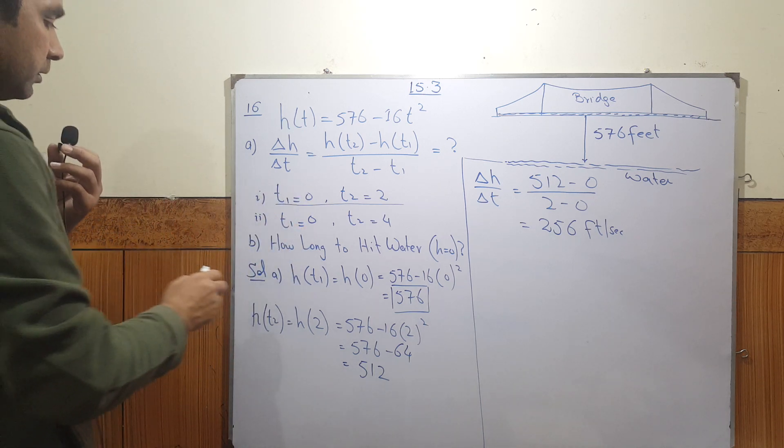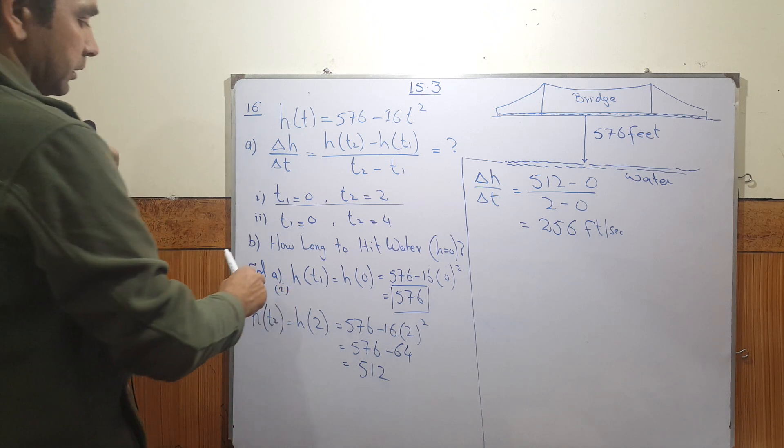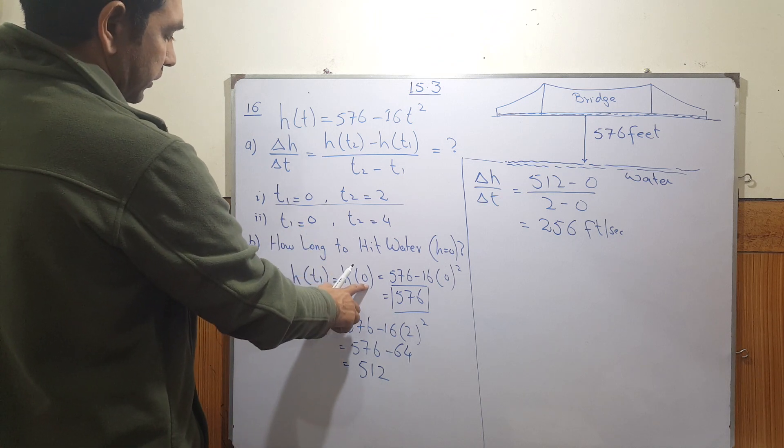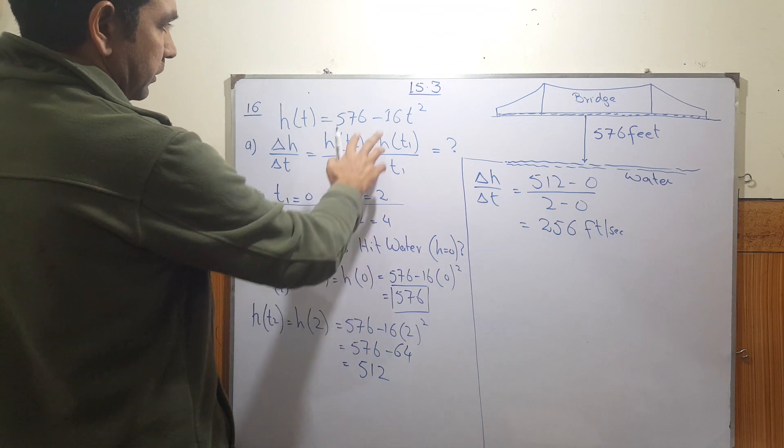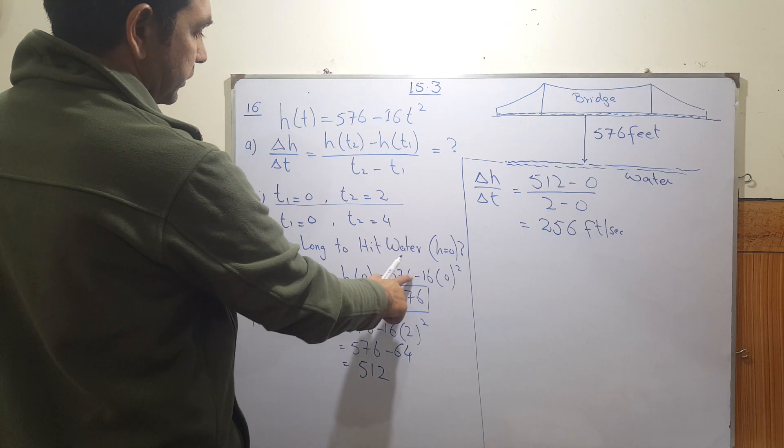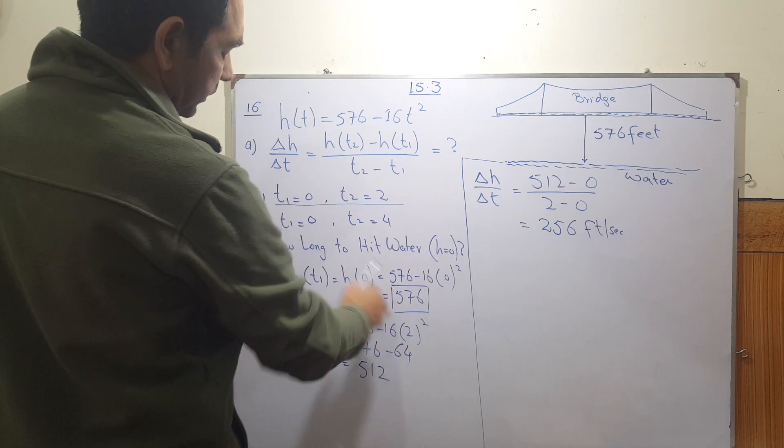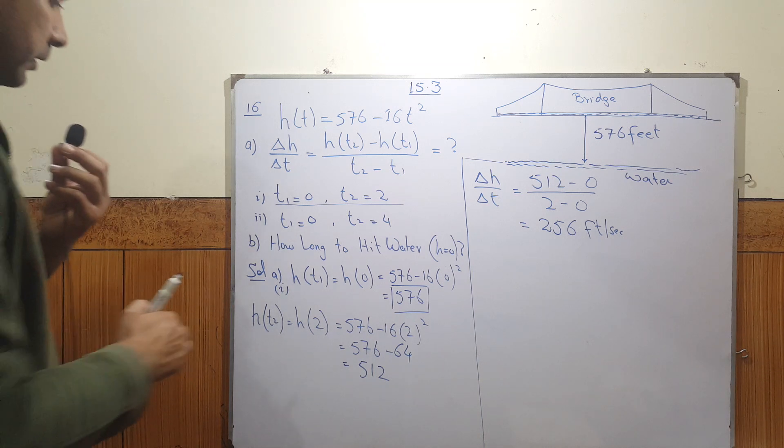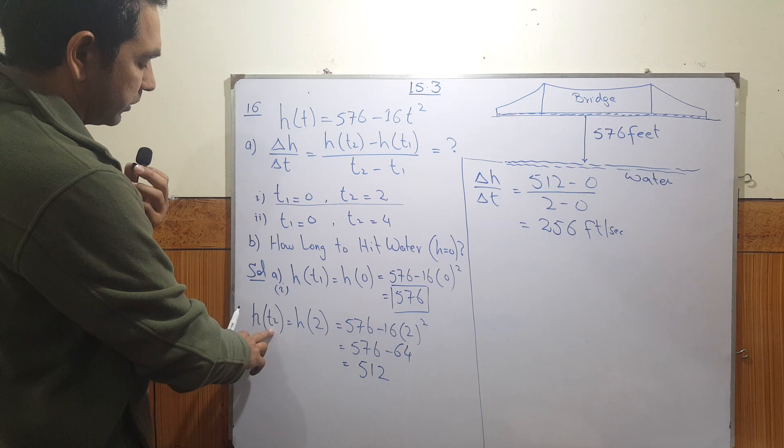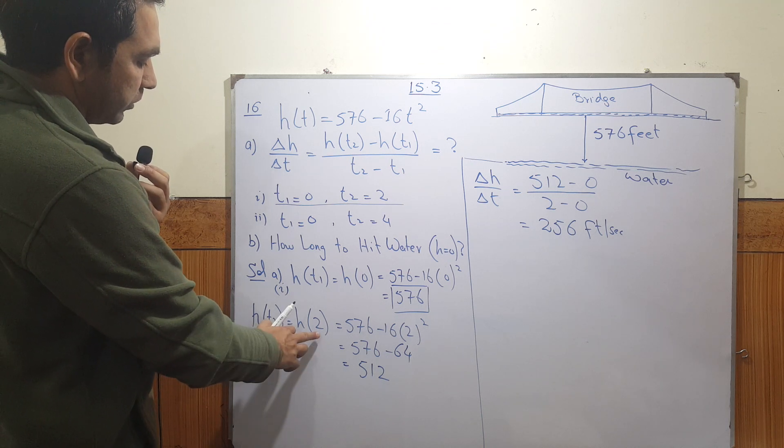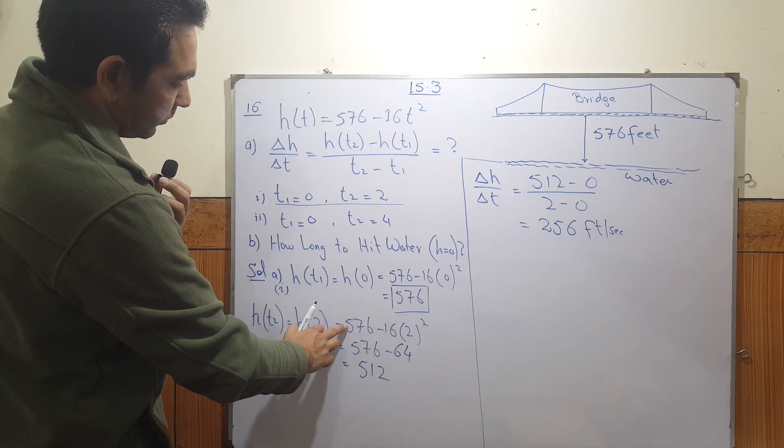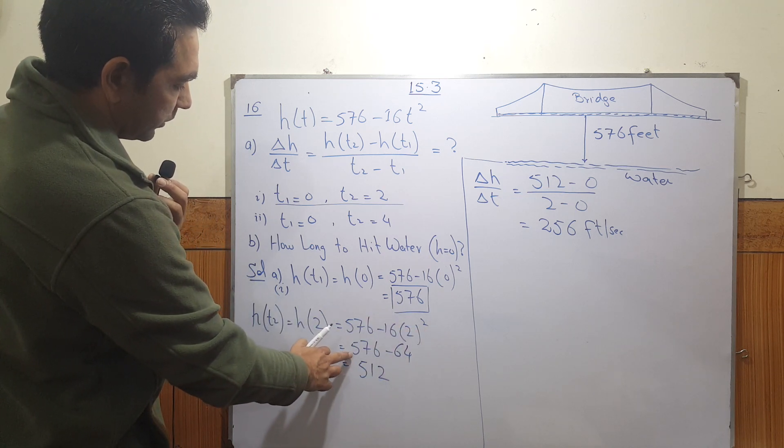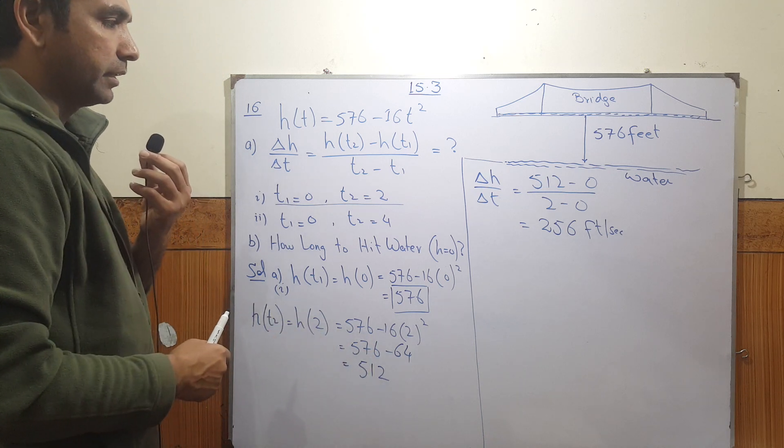So for the first one, part A1, we have to find the height at T1 which is zero. You replace T by zero in this function: 576 minus 16 into zero squared, that gives us 576. And then we replace the time T with two, which gives us 576 minus 16 into two whole squared, 576 minus 64, which gives us 512.